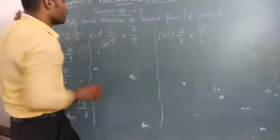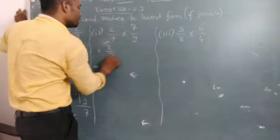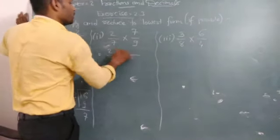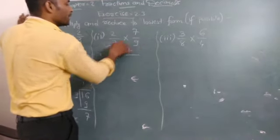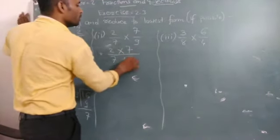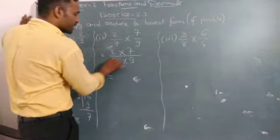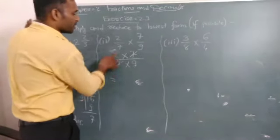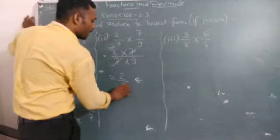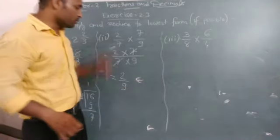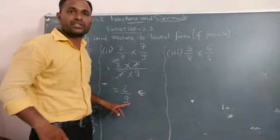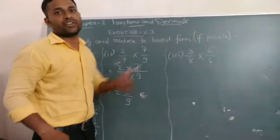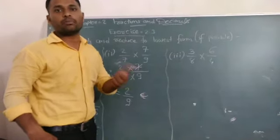Now, second, again see here. 2 upon 7. Numerator is multiplied to numerator, denominator to denominator. But 7, 7 is same, so it will be cut. Your answer is 2 by 9. Now remember the definition. Denominator is bigger than numerator. This is proper fraction. We can't convert it into mixed fraction.